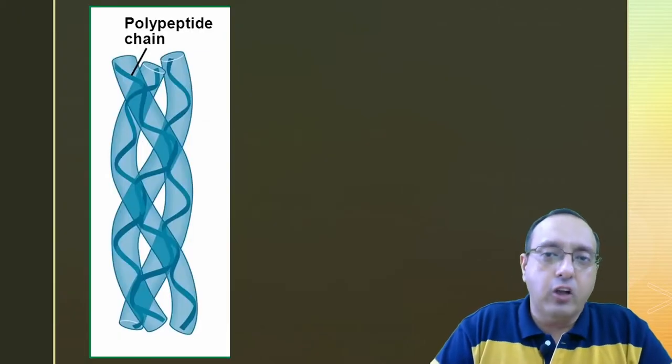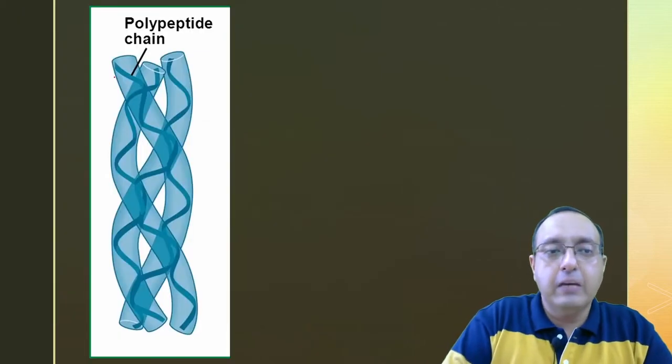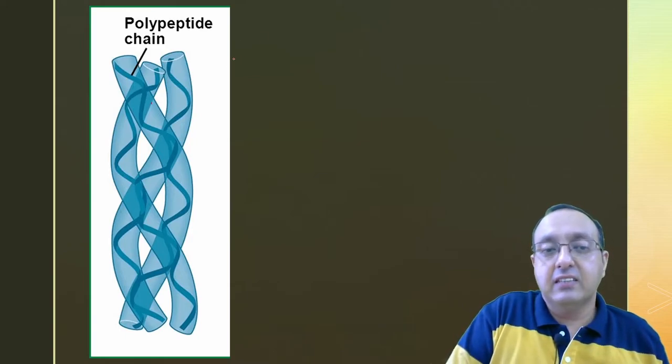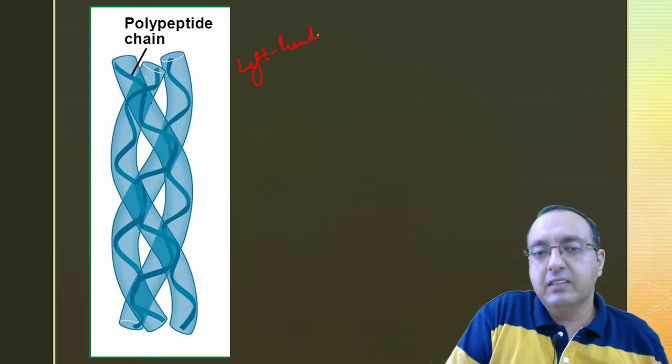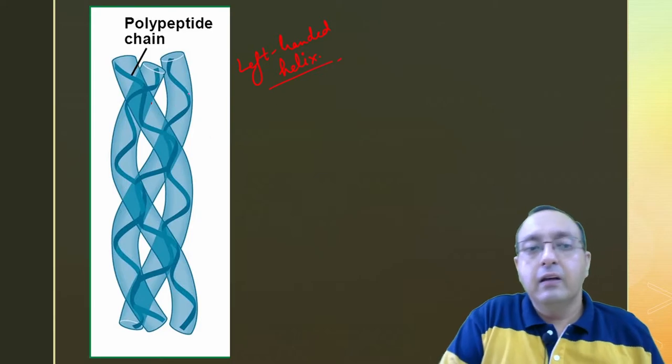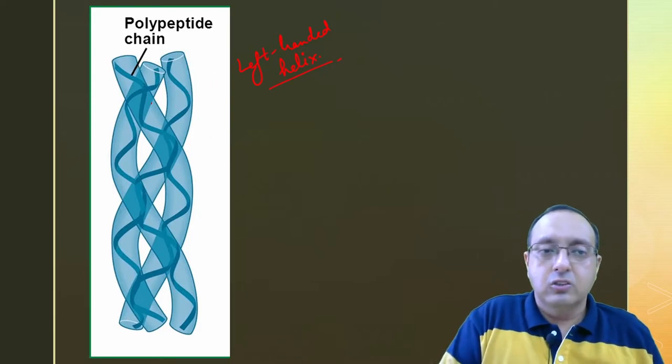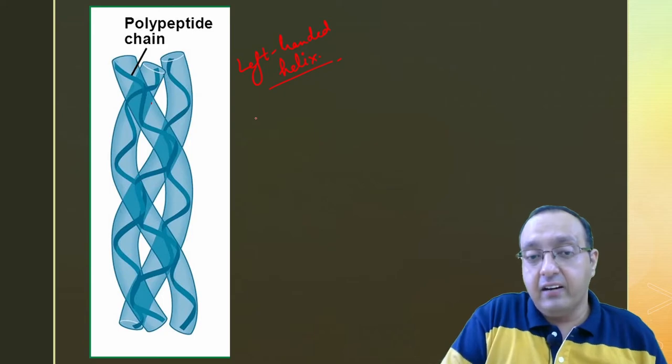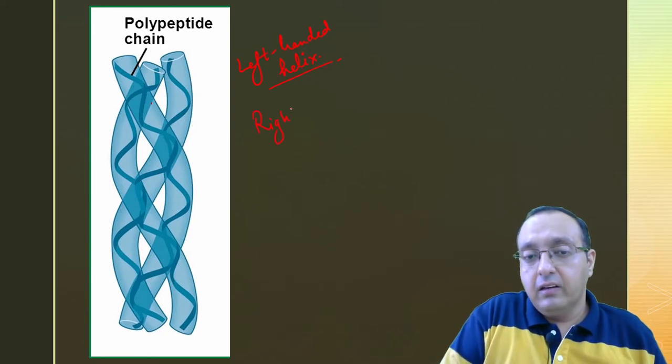So this is the collagen triple helix. There are three polypeptide chains here. Each polypeptide chain contains a left-handed helix. It's not an alpha helix, but it is a left-handed helix. And these are arranged in such a manner so that the overall collagen helix, which is the triple helix, it is right-handed in its twist.